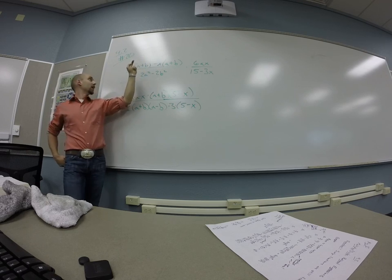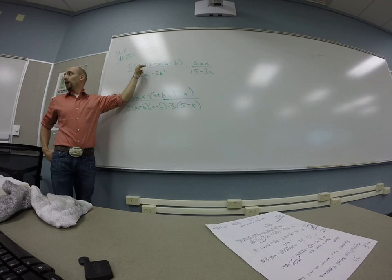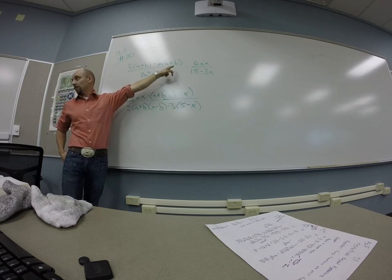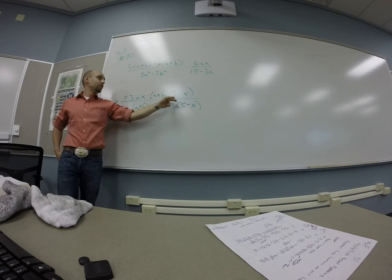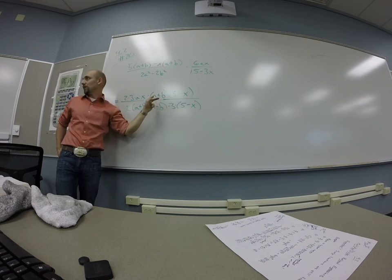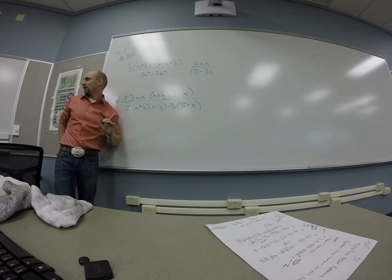One way I can think about this, maybe would help, is I have five a minus b's, right? And then somebody came and took x of them, right? Okay. So all told, I have five minus x, a minus b's left. You've earned it down. Okay. Does that help? Yeah.